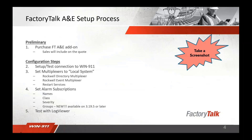The first requirement for configuring Factory Talk A&E with WIN 9-1-1 is to purchase the Factory Talk add-on. This add-on will be a new line item on your quote, completed by the sales team, and is required for the connection to work. The following configuration steps will be completed in a live demo, but I recommend taking a screenshot as a reference.